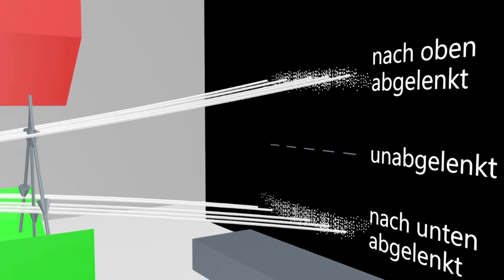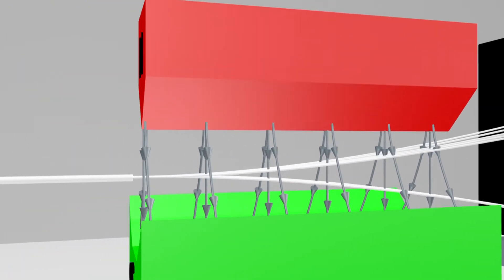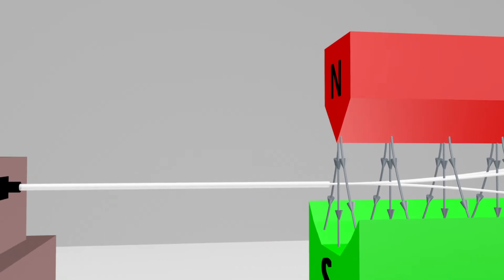Some of you might now think that the deflection is due to the Lorentz force. However, these are not positively or negatively charged particles that fly through the magnetic field.